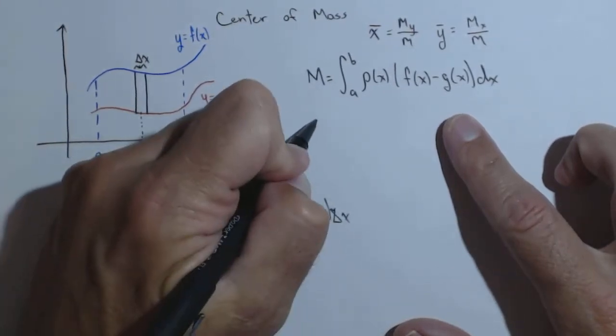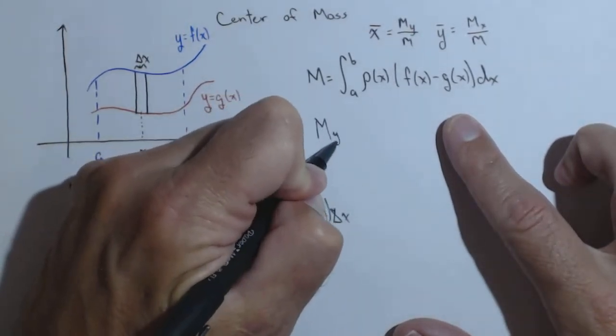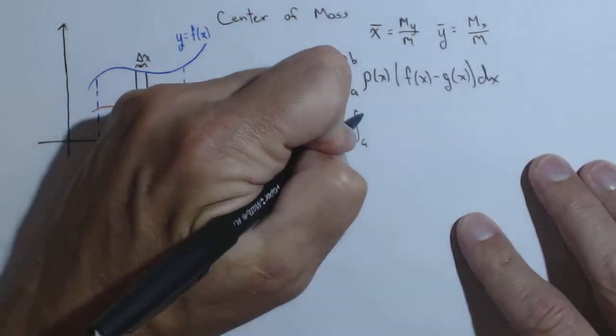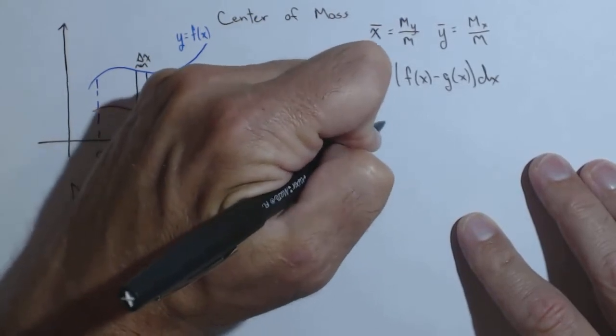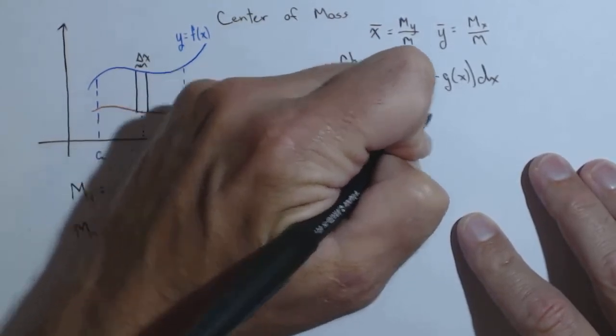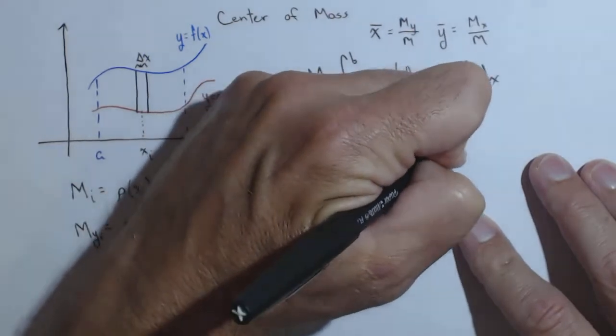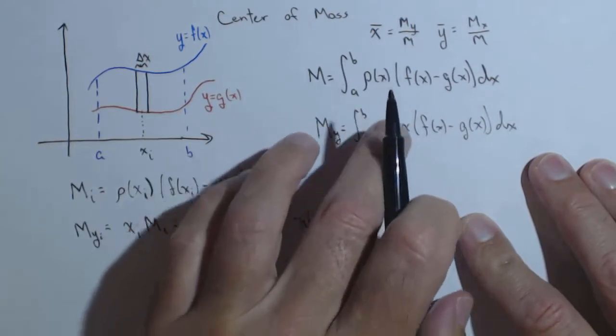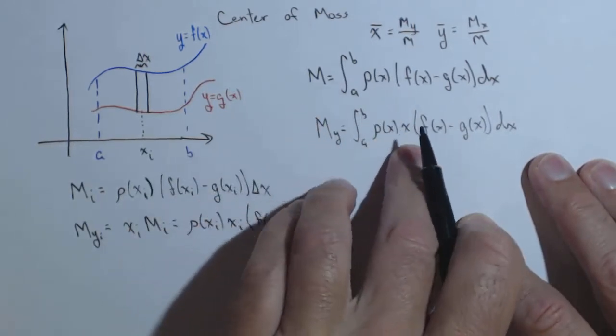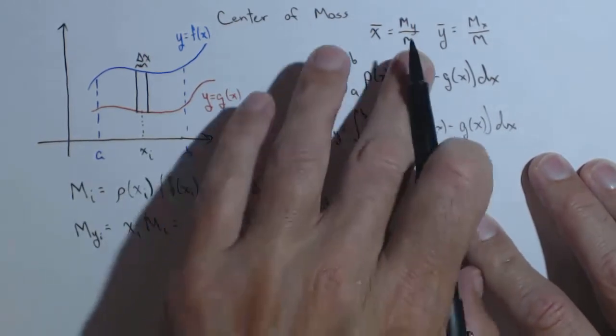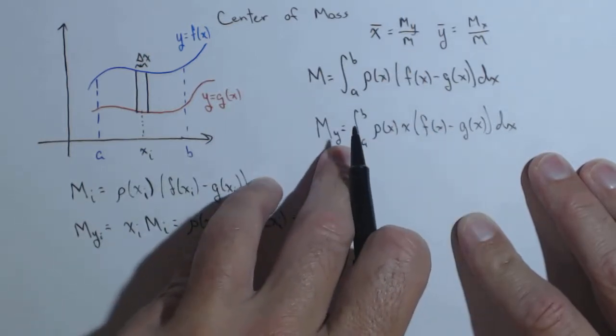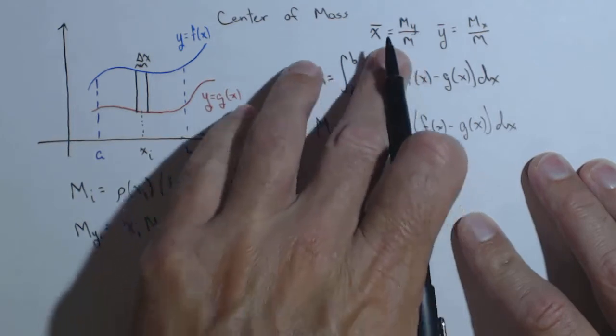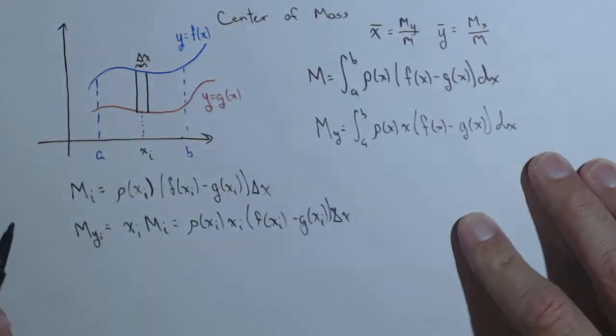What that's going to do is allow me to write m sub y as a definite integral from a to b of rho of x times x times f of x minus g of x dx. Notice, the only addition from m is that we had to put an x in there. And this is for finding x bar. I know there's a sub y in there because we're looking at rotating around the y-axis. But notice that m sub y is part of finding x bar.